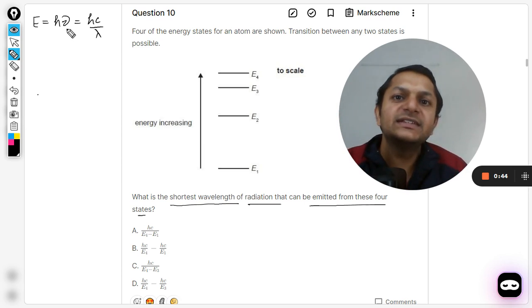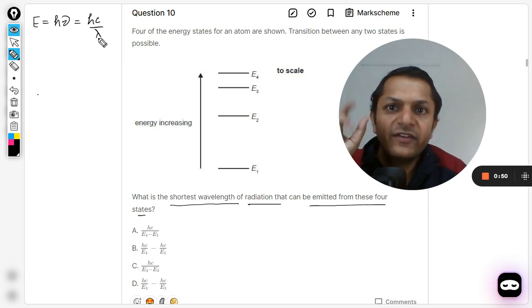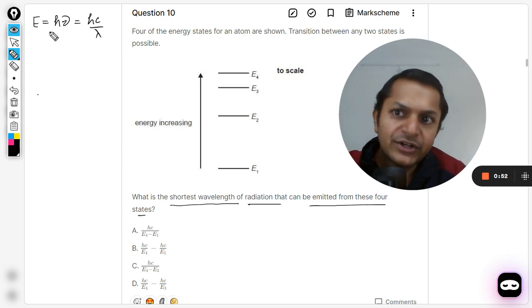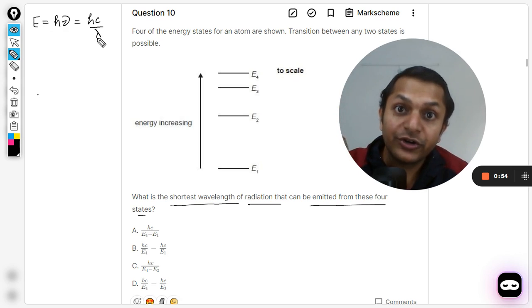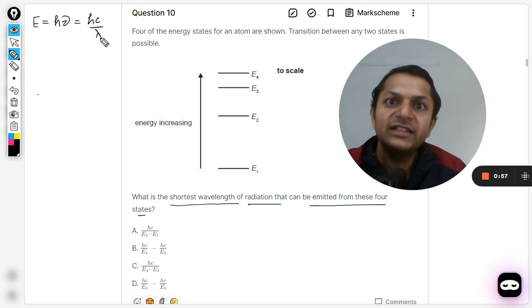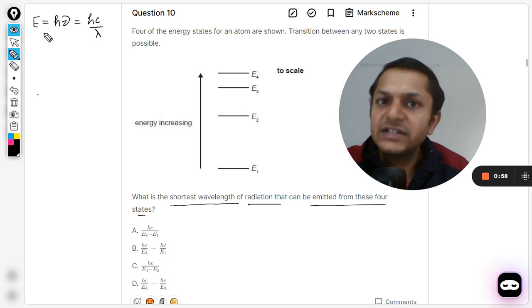If the frequency is high, energy is high. If frequency is lower, energy is lower. Similarly, wavelength is indirectly proportional to energy. So if wavelength is shorter, energy is higher. If wavelength is bigger, the energy is lesser.